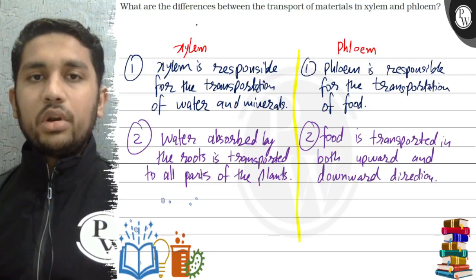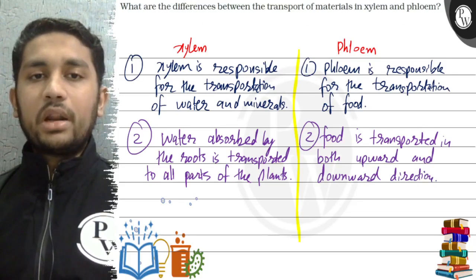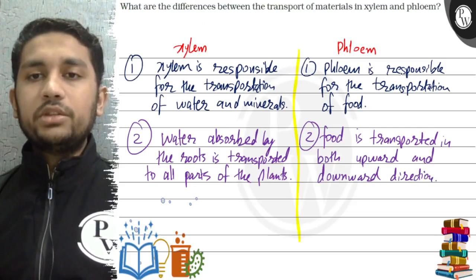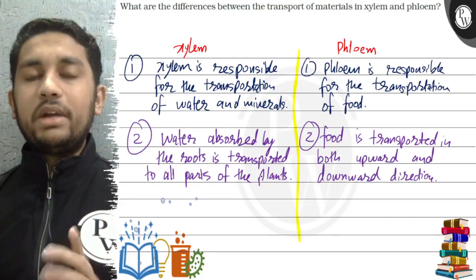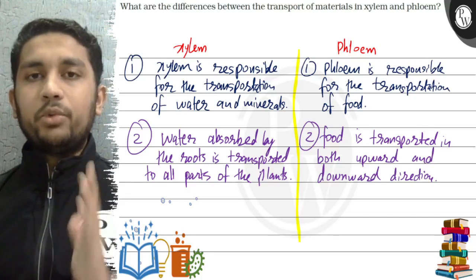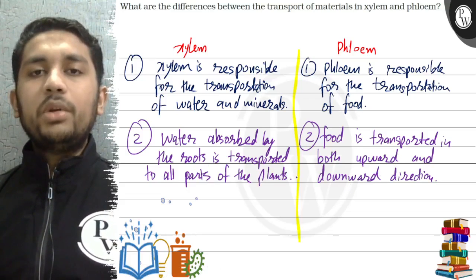So what are the differences between the transport of materials in xylem and phloem? The final answer is: xylem is responsible for the transportation of water and minerals, whereas phloem is responsible for the transportation of food. Water absorbed by the roots is transported to all parts of the plant in only one direction, that is upward, whereas in phloem food is transported in both upward and downward direction. Hope you understood it well.